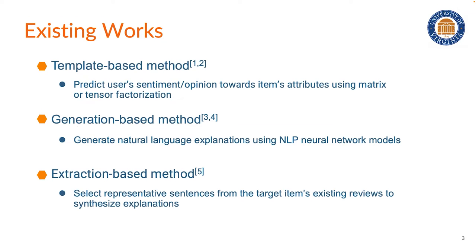Existing works basically fall into three types: template-based method, generation-based method, and extraction-based method. Template-based methods need to fill in the slots in some predefined templates using item attribute words. This kind of model typically needs to predict users' opinion toward items' attributes using matrix or tensor factorization.